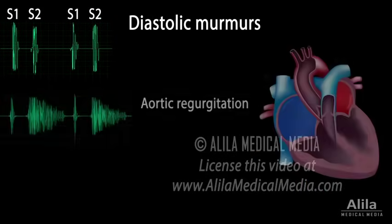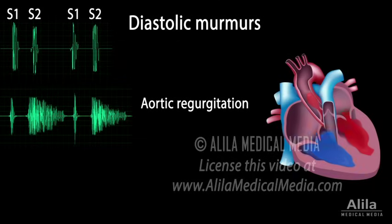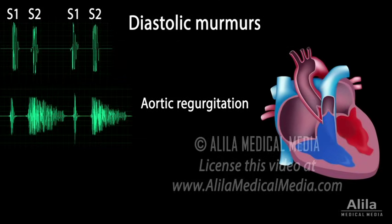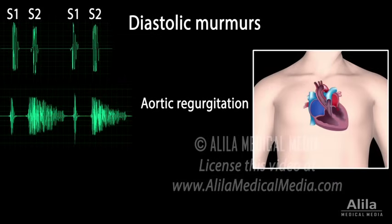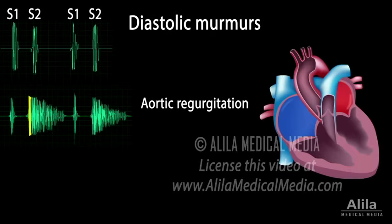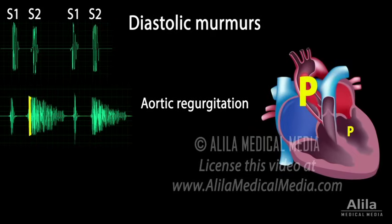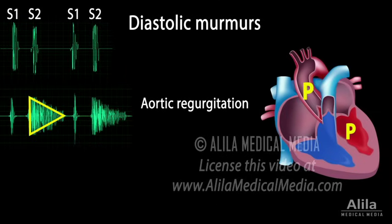An example of diastolic murmurs is aortic valve regurgitation. This is when the aortic valve does not close properly, resulting in blood flowing back to the left ventricle during diastole, the filling phase. As the blood flows in the reverse direction, the murmur is best heard not in the aortic area, but rather along the left sternal border. It peaks at the beginning of diastole when the pressure difference is highest, then rapidly decreases as equilibrium is reached.